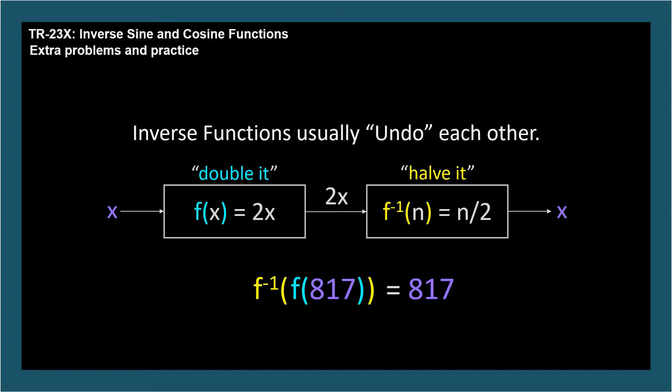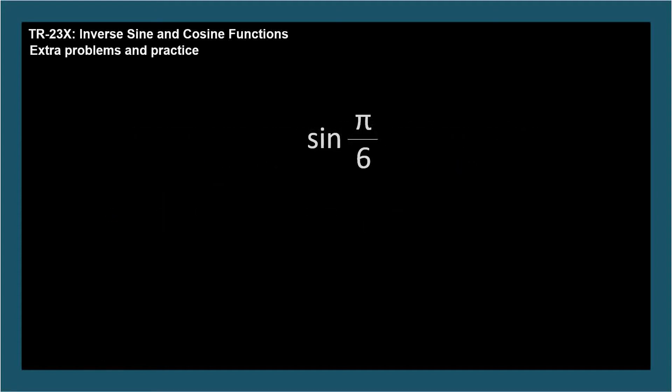We can see the same type of behavior with trig functions and their inverses, but there's a catch, so please pay attention. Trigonometry instructors love to spring this on their students. The expression sine pi over 6 evaluates to a number between negative 1 and 1. Of course, this is the domain for the arcsine function, so sine pi over 6 can be an argument for arcsine like this.